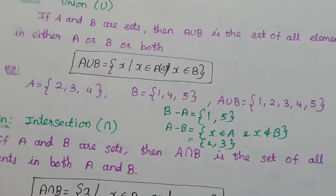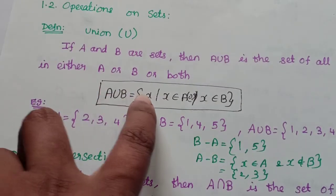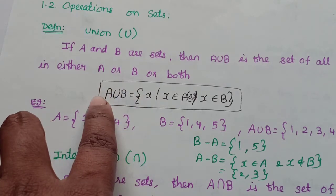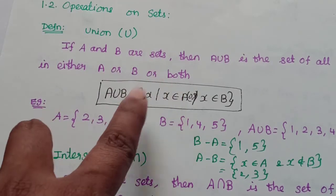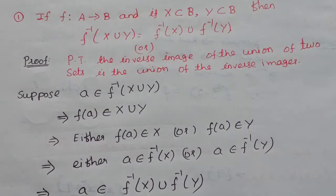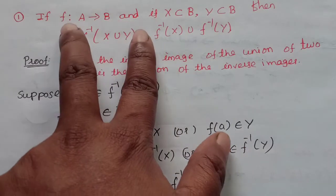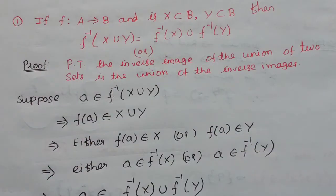We have a definition of union. This is a function. If we say left hand side equal to right hand side, we will prove that one is contained in another. If we prove that, it will be easier to prove the equality.